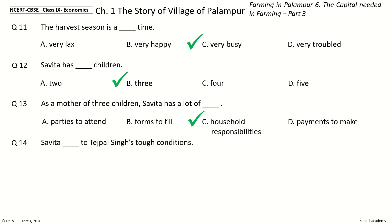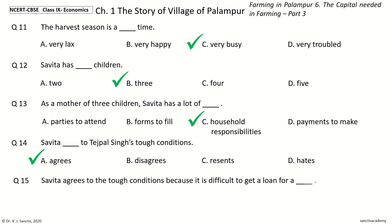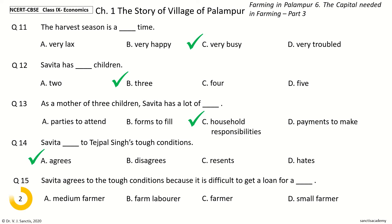Question 14. Savita Dash to Tejpal Singh's Tough Conditions. The options are: Agrees, Disagrees, Resents, Hates. And the answer is Agrees. So, Savita agrees to Tejpal Singh's Tough Conditions. Question 15. Savita agrees to the Tough Conditions because it is difficult to get a loan for a Dash. The options are: Medium Farmer, Farm Laborer, Farmer, Small Farmer. And the answer is Small Farmer. So, Savita agrees to the Tough Conditions because it is difficult to get a loan for a Small Farmer.